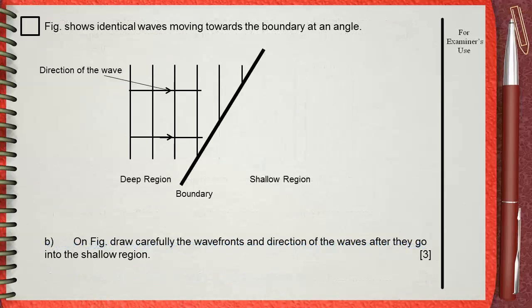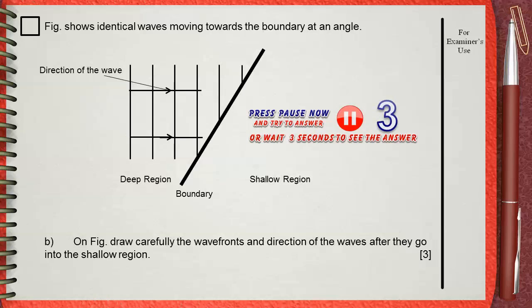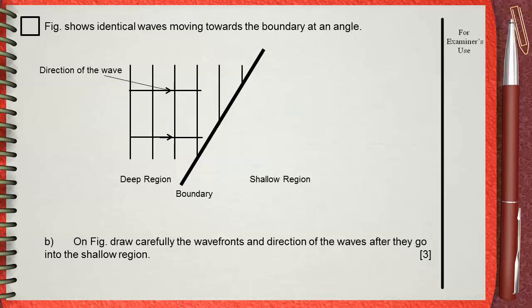Question C. On figure, draw carefully the wavefronts and direction of the waves after they go into the shallow region. In this question, the wave is not falling perpendicular to the boundary. It is incident with an angle. That's why this wave must break. The key to answer this question is to identify the points of intersection between the incident wave and the boundary.